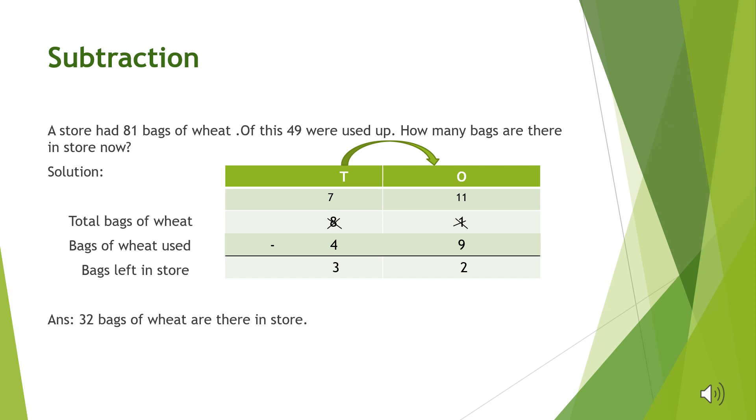Whenever in a question things are being used, reduced, or taken away, we perform subtraction. This can be easily understood when we notice words like how many are left, given away, left behind. We will perform subtraction.